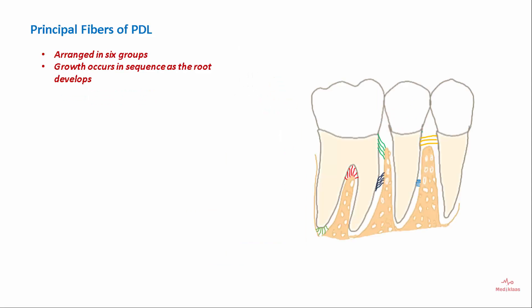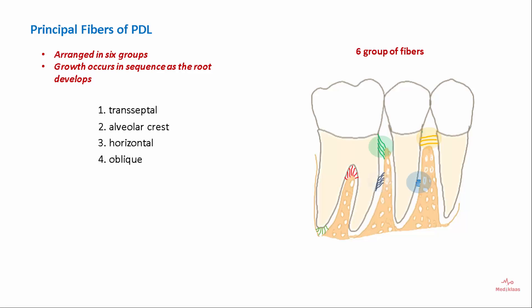The principal fibers of the PDL are arranged in six groups, and their growth occurs in sequence as the root develops. The six groups are: the transseptal group, alveolar crest group, horizontal group, oblique group, apical fibers, and interradicular group of fibers.